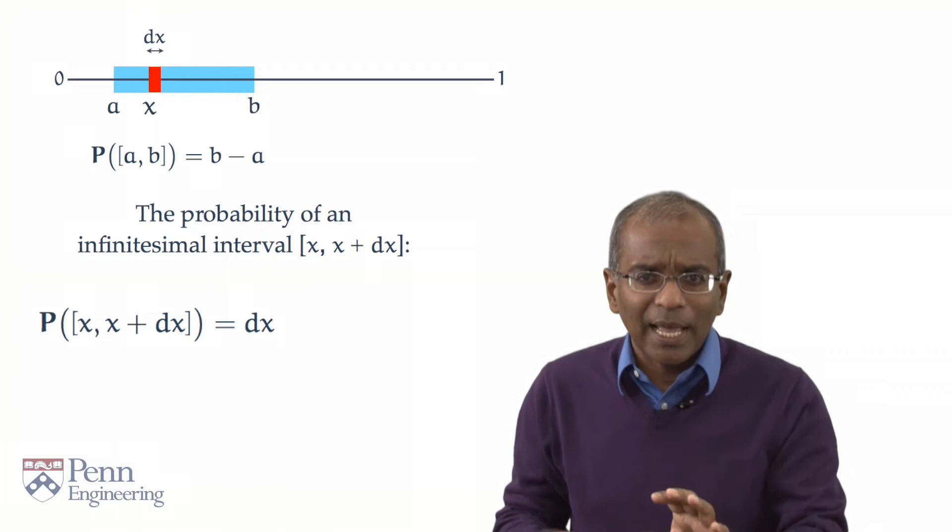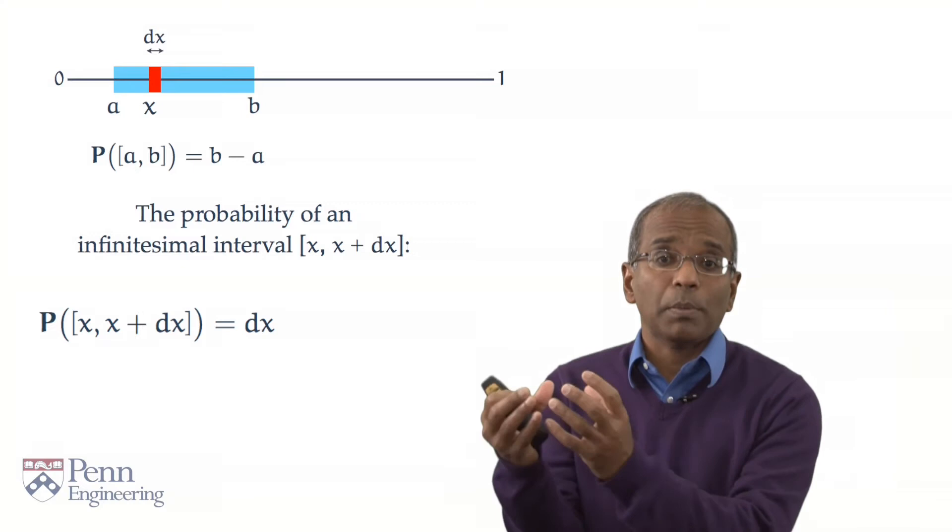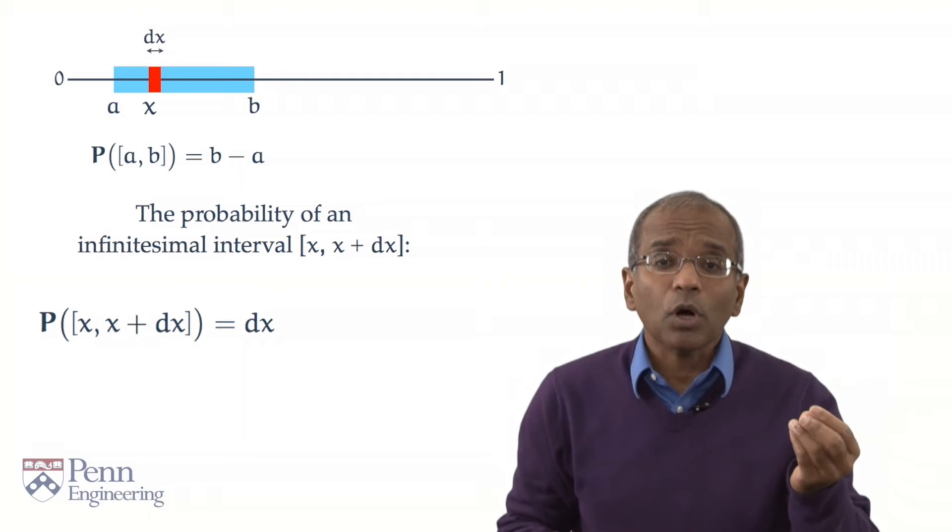Now, pause for a moment and look at the equation. On the left, we have a probability, or more precisely, a probability mass. It's got weight, gravitas. On the right, we've got a length. Now to equate mass to length, there must be something multiplying length. And what must multiply length? Mass divided by length.